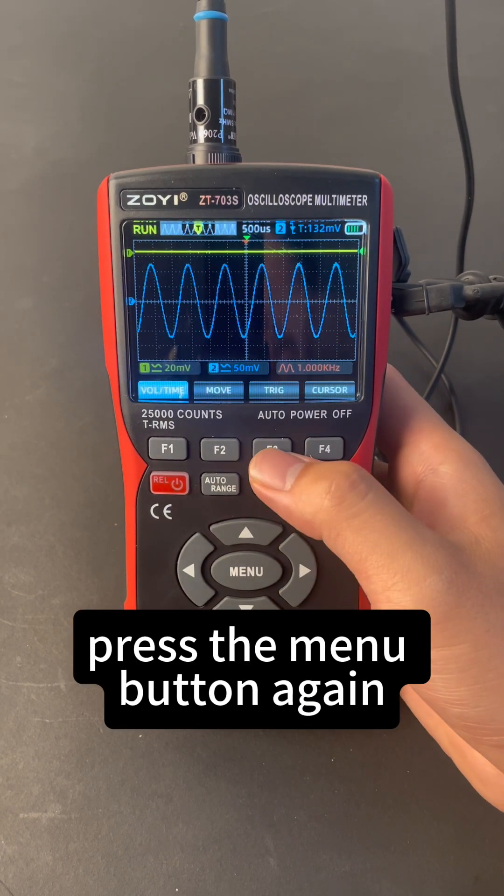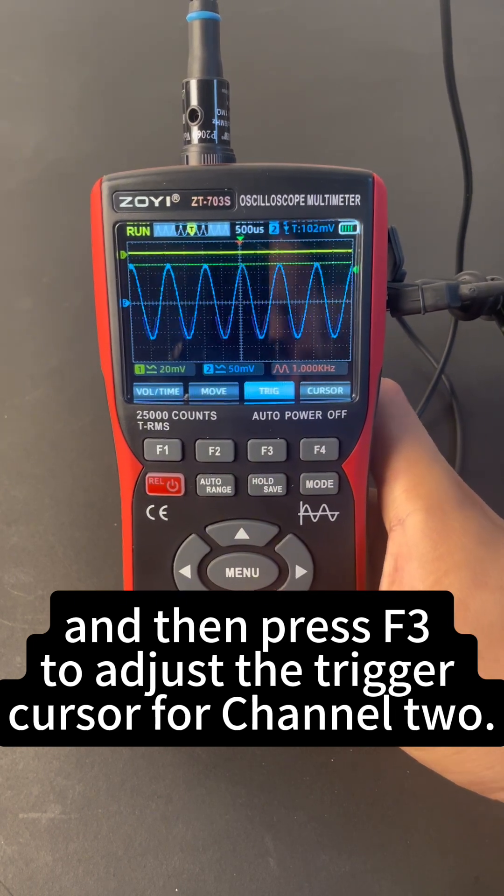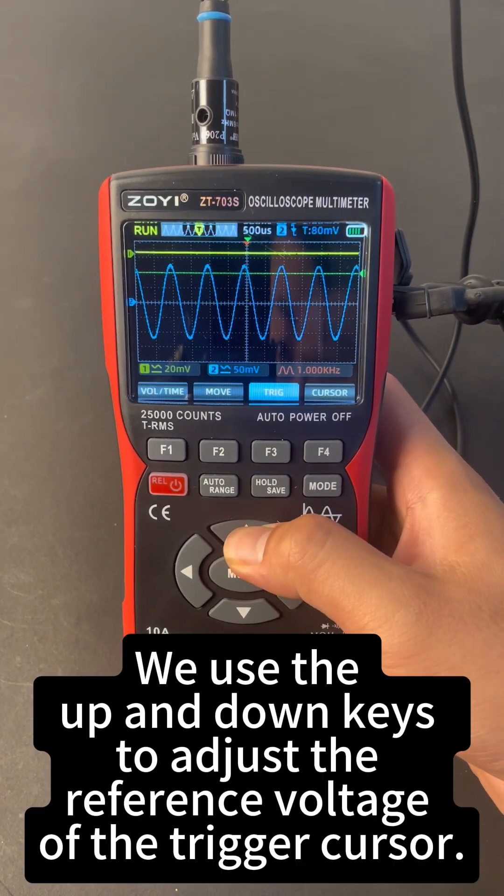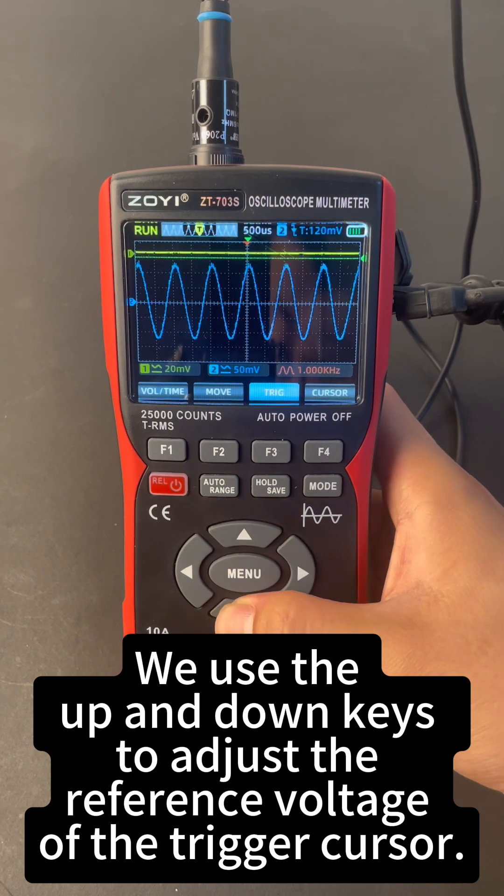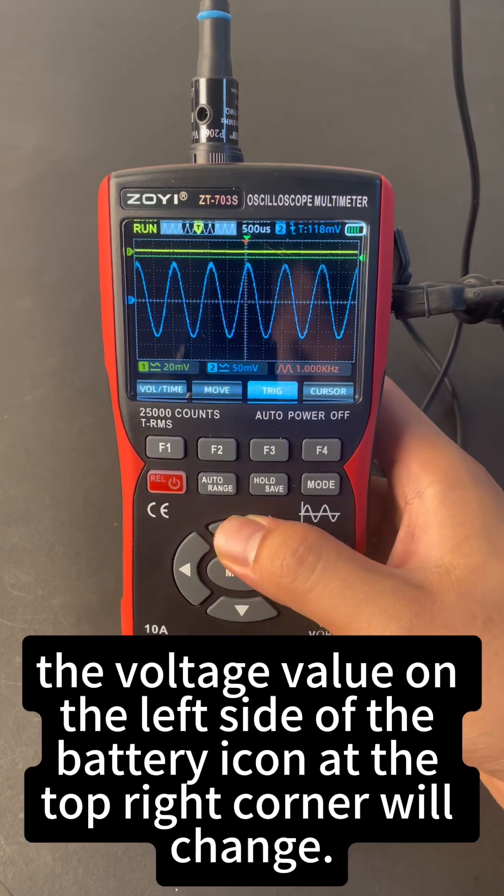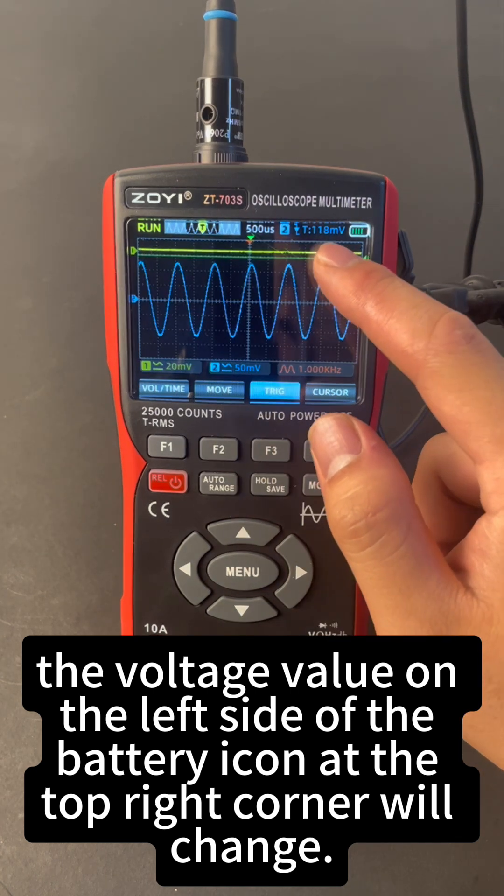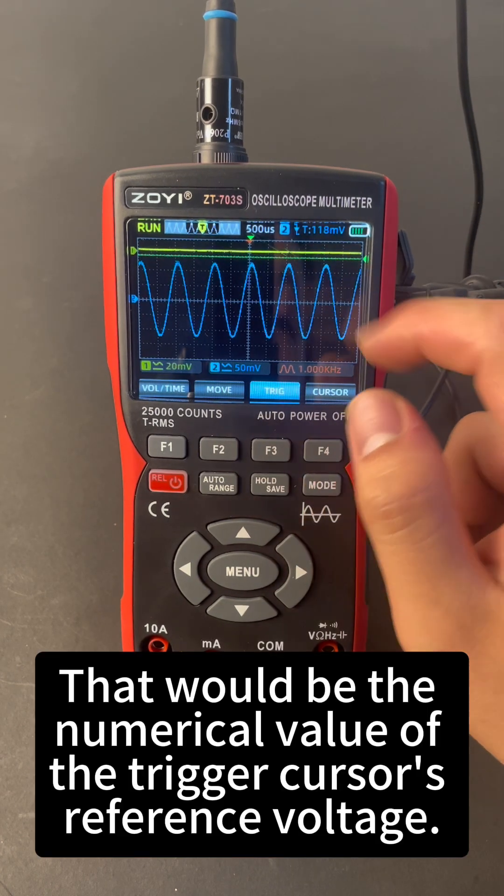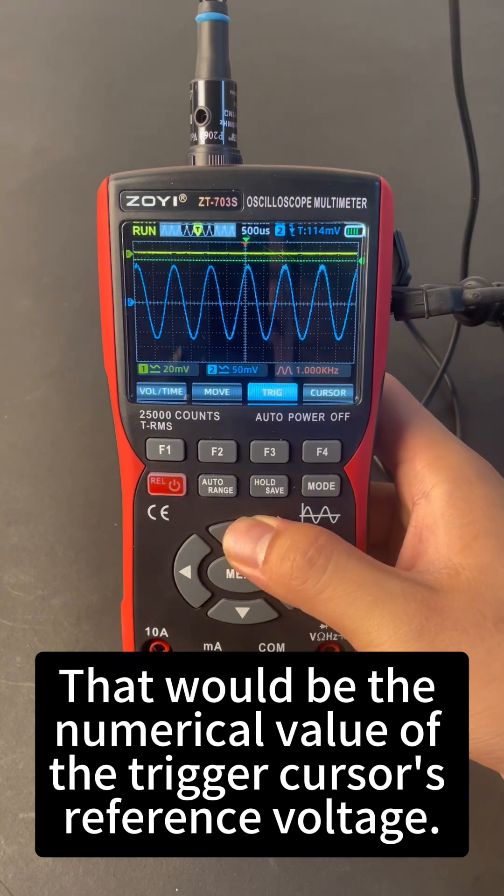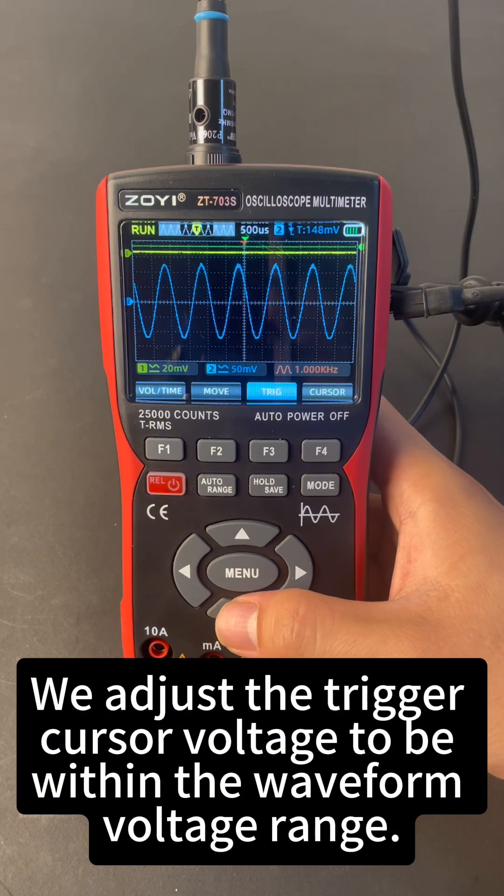Now, press the menu button again, and then press F3 to adjust the trigger cursor for channel 2. We use the up and down keys to adjust the reference voltage of the trigger cursor. When you press the up and down buttons once, the voltage value on the left side of the battery icon at the top right corner will change. That would be the numerical value of the trigger cursor's reference voltage.